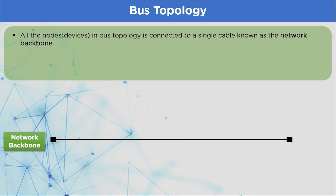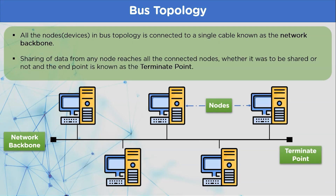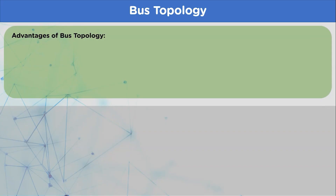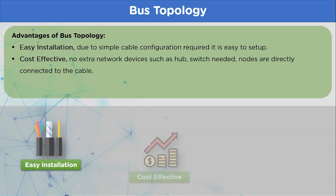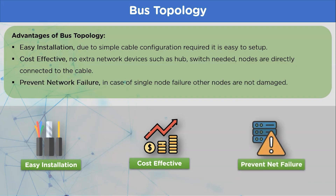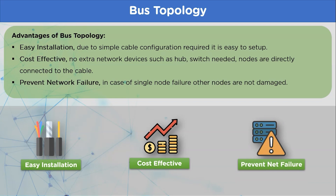First is bus topology. In this topology, the connection channel is a single cable known as the network backbone, through which all other nodes are connected. Data packets sent by nodes are provided with the receiver address to avoid transmission errors. Data in this topology can travel from any endpoint, where they are termed as terminate points. Advantages: it is easy to set up due to simple configuration settings, is cost effective as it requires only a network cable, and in case of a node crash, the whole network remains unaffected.